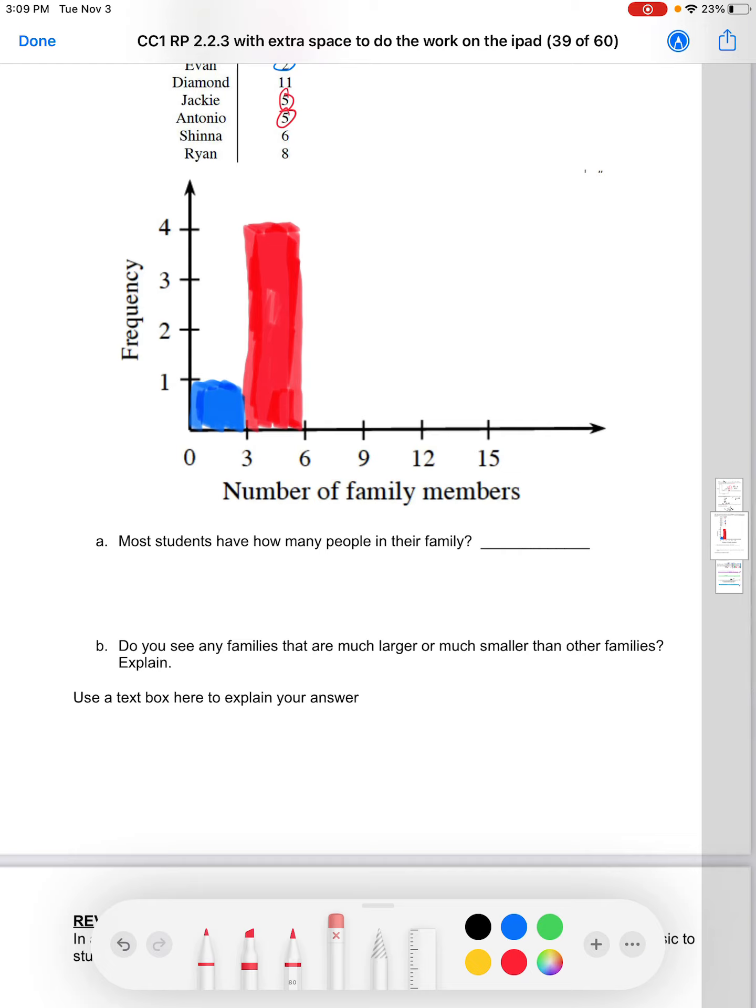Now, just to talk quickly about these problems. I don't think that was the focus of this, but most students have how many people in their family? You'll be able to look at this, and you'll be able to tell where most of the students are. I can already tell, right? There's probably going to be three, at least the 3 to 6 range for sure, right? Maybe more, but at least that. And then what we're doing is when we say, do you see any families that are much larger or much smaller than other families, right? What we're looking for is, this would happen if maybe there was one group here, and maybe like two groups here, something like that. This group right here is what we call an outlier.